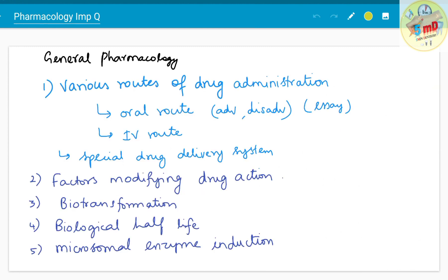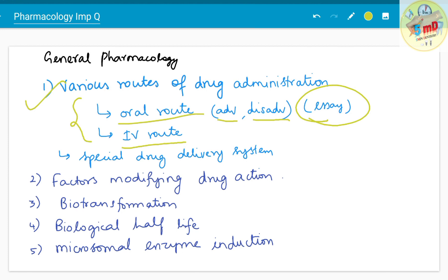Moving on to the important questions, starting with general pharmacology: you have to learn about various routes of drug administration. These include oral route — the advantages and disadvantages of oral route can be asked as an essay — and also IV route. These two are the main routes, though you should also know all other routes. Special drug delivery systems have also been asked as a 5-mark question.